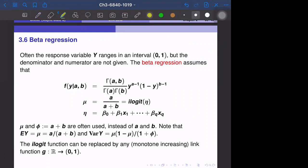Often the response variable y ranges in an interval (0,1), but the denominator and numerator are not given. For the mammals sleep data, we don't know that, or we just got the ratio.